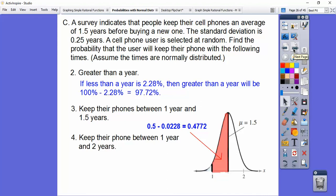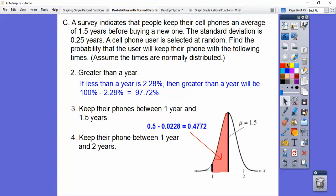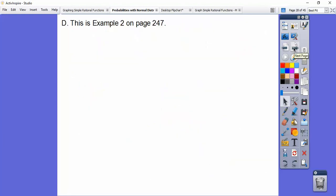How about keep their phones between 1 year and 2 years? Well, 1 year and 2 years, well, here's 1 year, and then here's up to 2 years. So we're going to include that side. Sorry, let me slide that back. So when we include that side, we just double that, so about 95.44% of the people.